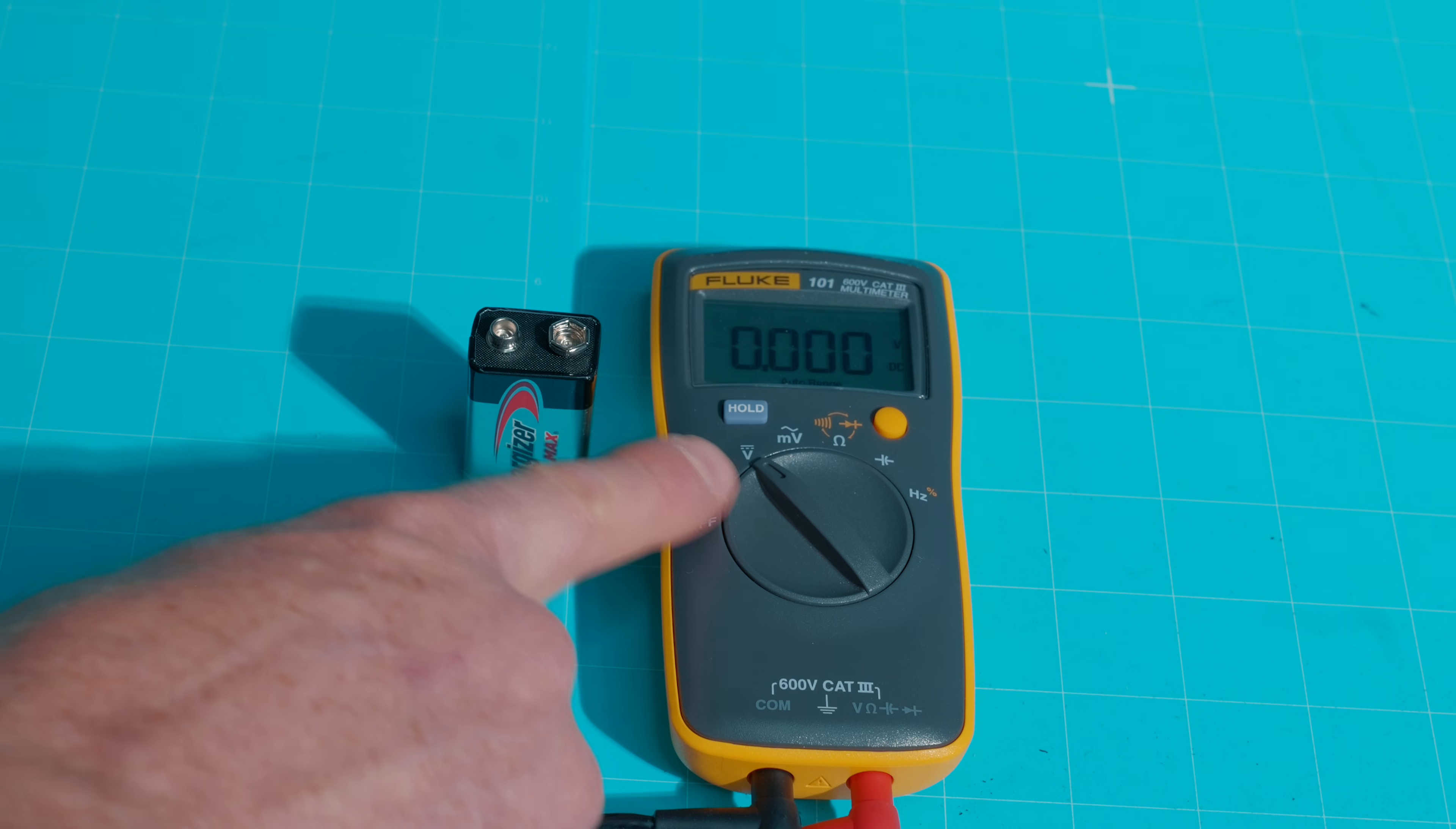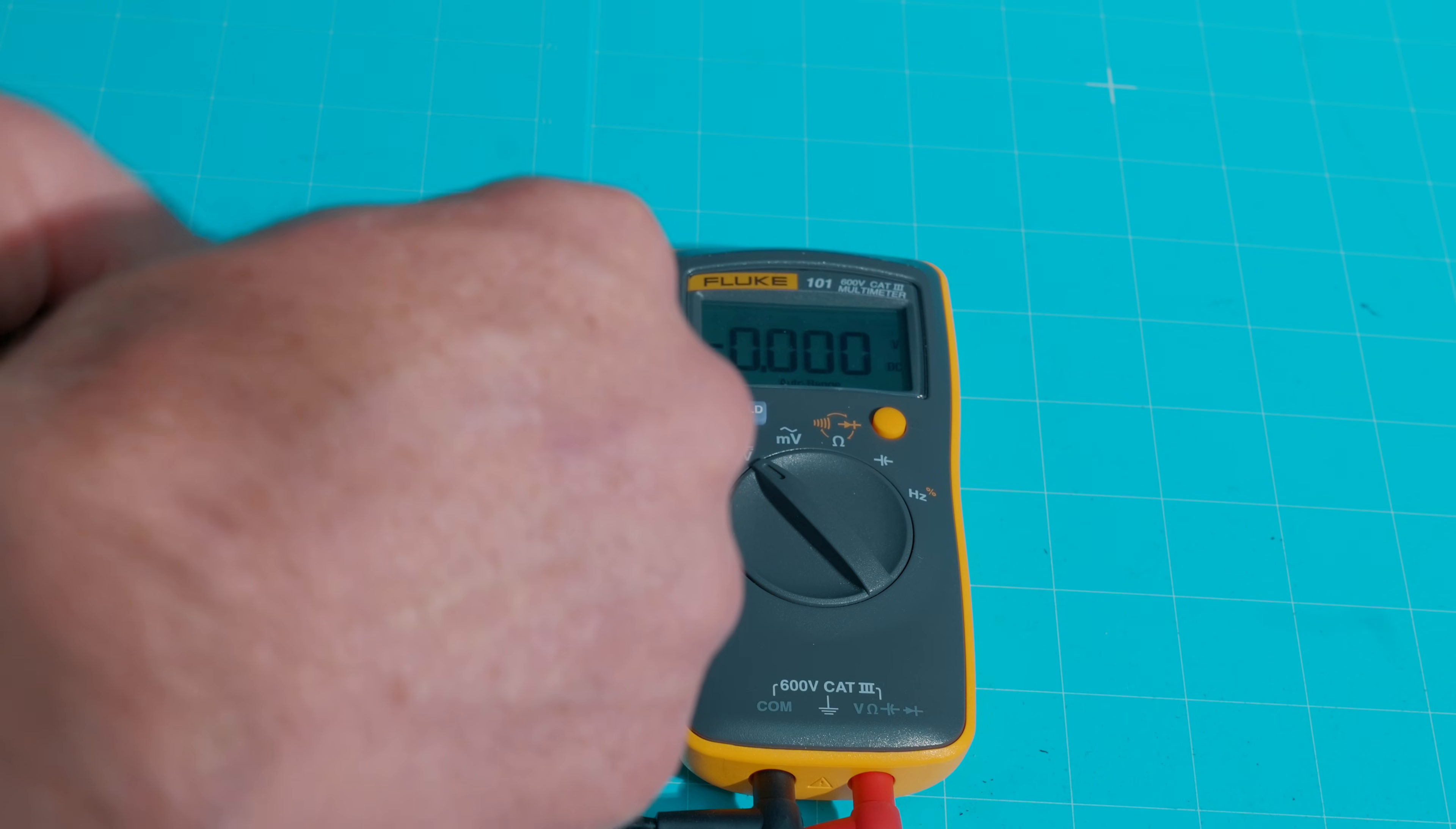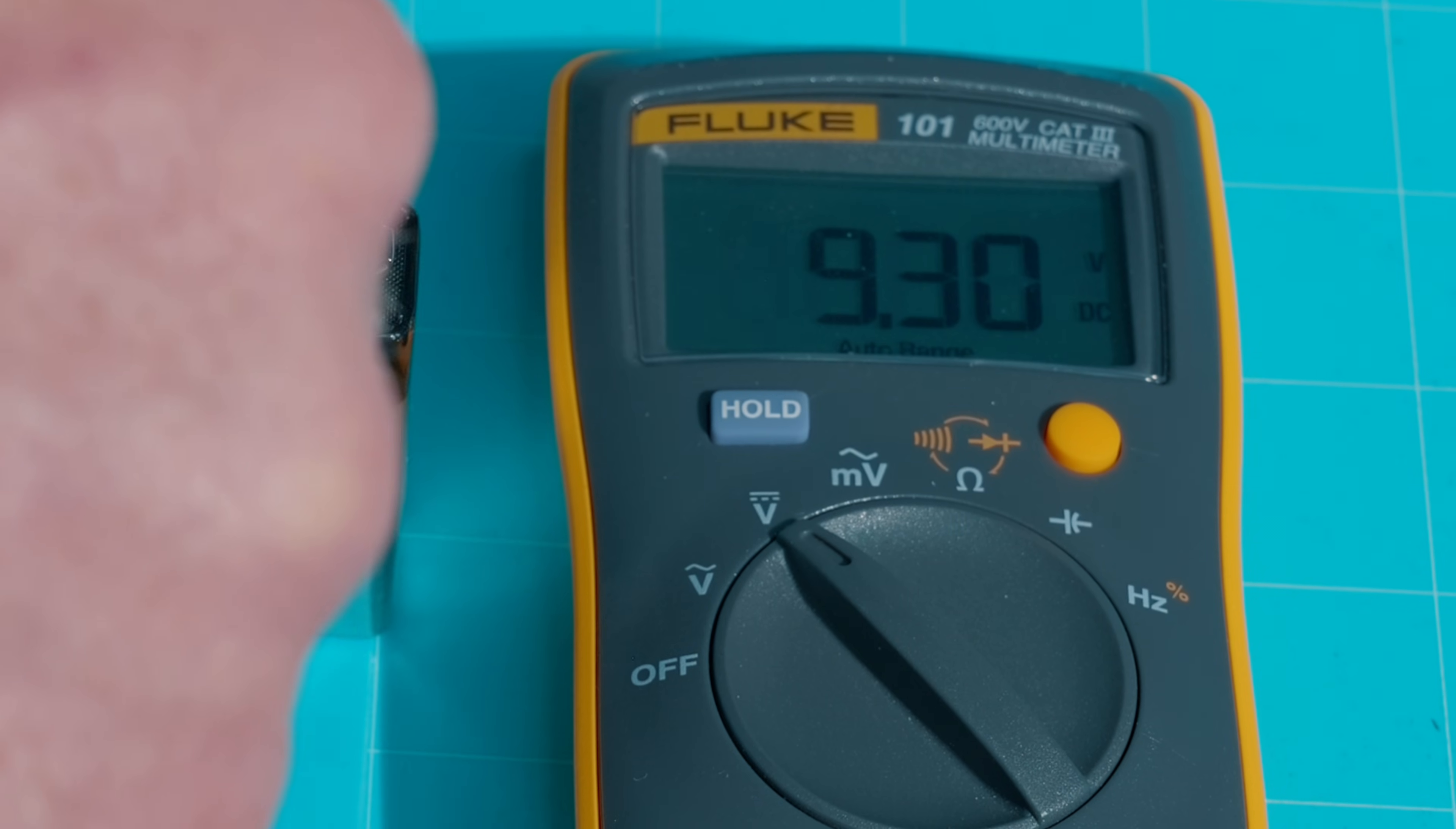So the next feature is the V with the straight and dotted line. That's the volts DC. I've got a brand new 9-volt battery here. We'll throw our leads across the two terminals. And as you can see, we're right about 9.3 volts. Now, this is a brand new battery, so that's good.